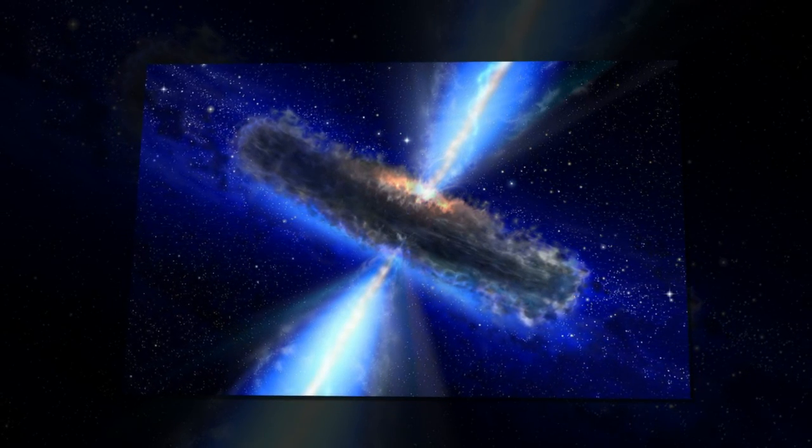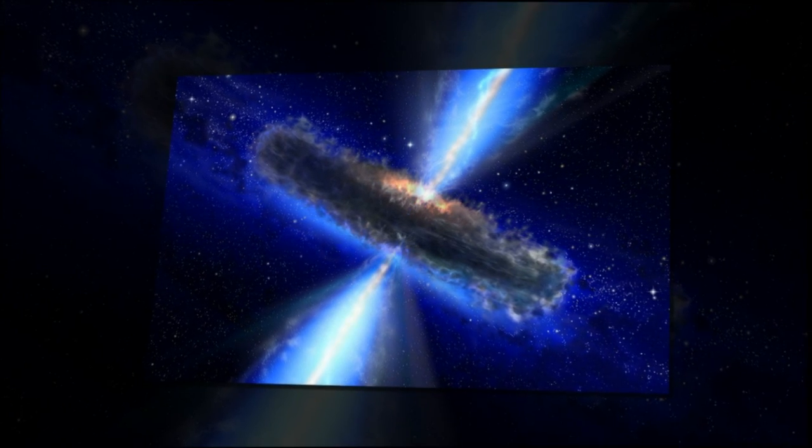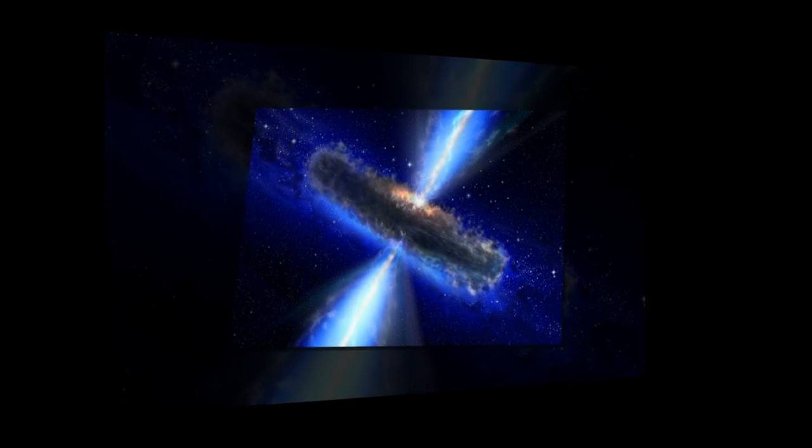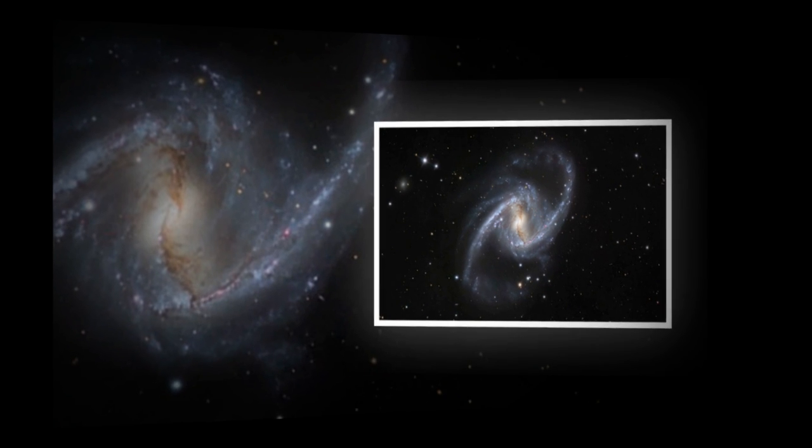But that all changed earlier this month, when a number of telescopes and the European Space Agency's ESA Integral satellite observed a burst of high-energy light coming from almost 8,000 light-years away in the constellation Cygnus, the Swan.